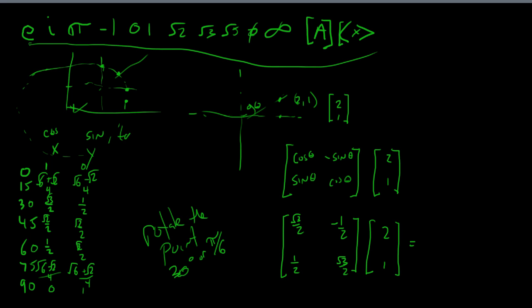Following up on the previous video's two ways to multiply, we're going to think about multiplying 2 times the first column plus 1 times the second column. 2 times the first column: 2 times square root of 3 over 2 is the square root of 3, and 2 times one half is 1. Then 1 times the second column gives us minus one half, plus the square root of 3 over 2.